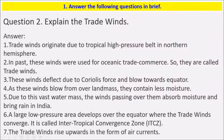As these winds blow from over the landmass, they contain less moisture. Due to the vast water mass, the winds passing over the ocean absorb moisture and bring rain in India. A large low pressure area develops over the equator where the trade winds converge; it is called the Intertropical Convergence Zone, that is, ITCZ. The trade winds rise upwards in the form of air currents.